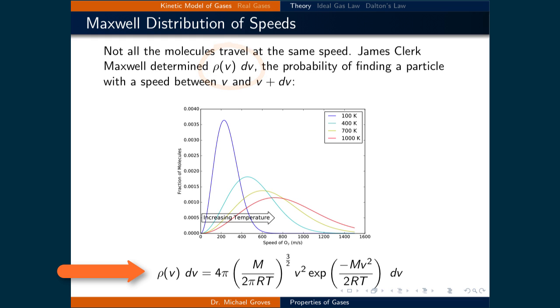ρ is equal to 4π times (M over 2πRT) raised to the power of 3/2 times v² times the exponent of negative Mv² divided by 2RT, where capital M is the molar mass, R is the gas constant, T is the temperature, and v is the velocity.